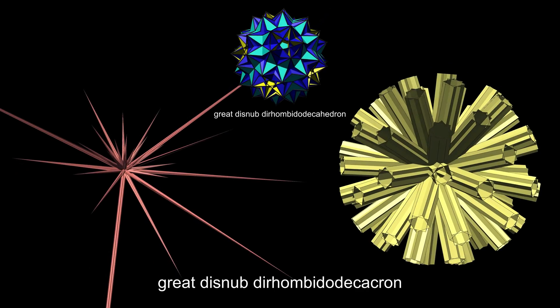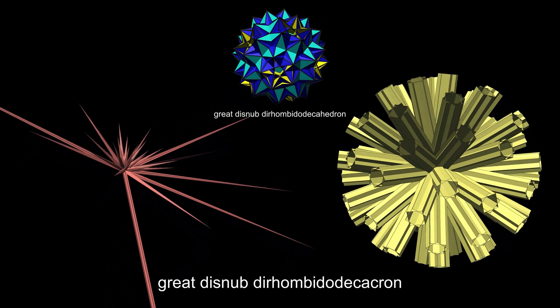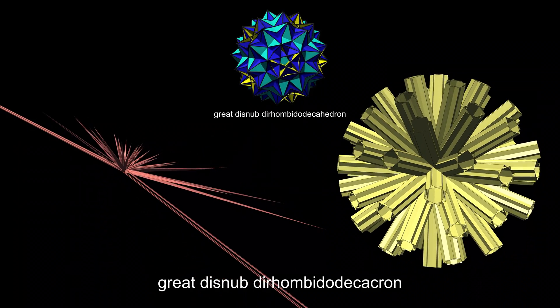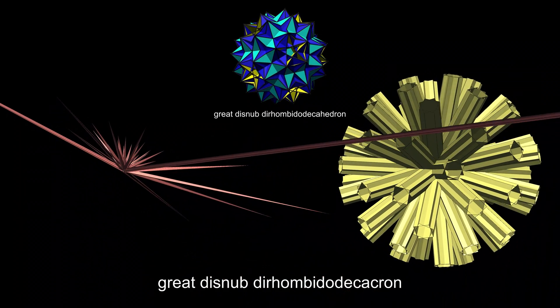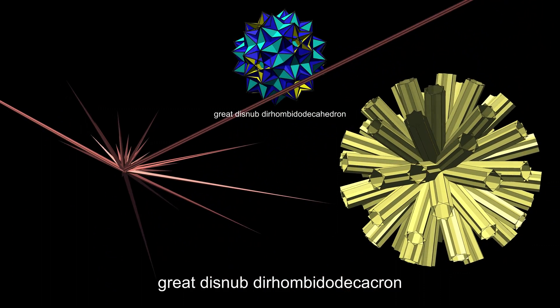And finally, Schilling's figure, the great disnub dodecahemidodecahedron. Its dual is visually identical to the great dirhombicosidodecahedron dual.